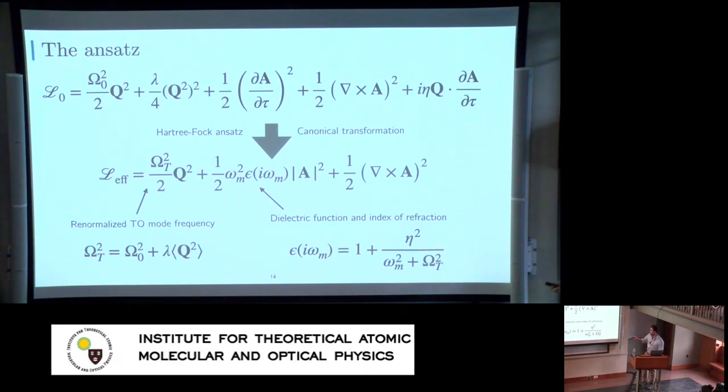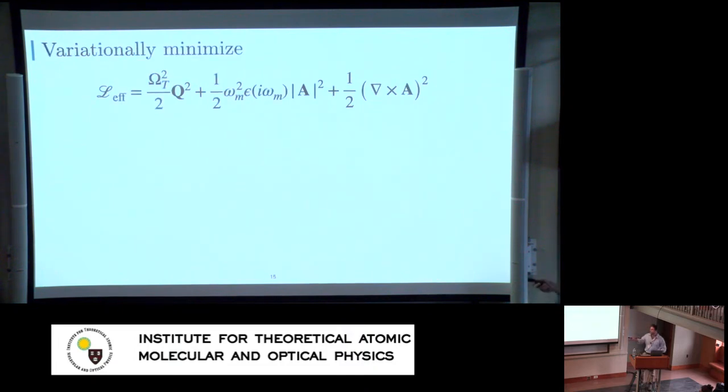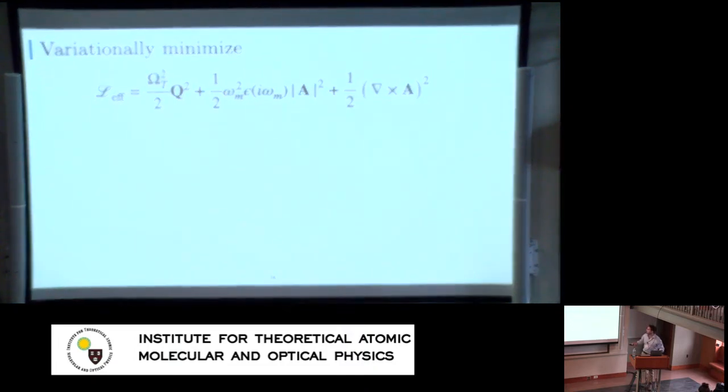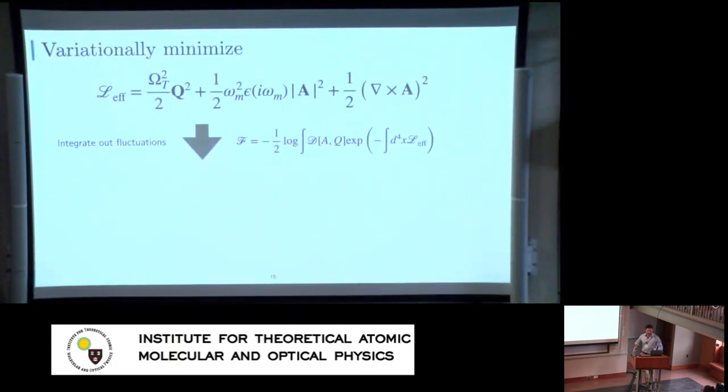And it involves the dielectric medium of your photons, which receives by this canonical transformation, involves the TO mode frequency. So this parameter enters here, and it governs the fluctuations of your photons in the system. And then you can minimize this variational ansatz, what is the best self-consistently determined phonon frequency, including the contribution from all fluctuations, including especially photon fluctuations.